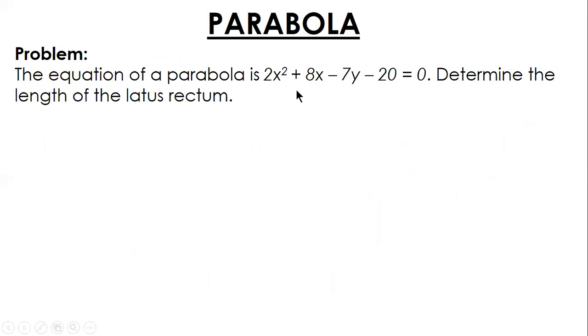Let us solve a sample problem. The equation of a parabola is 2x² + 8x - 7y - 20 = 0. Determine the length of the latus rectum. The first step is transpose the variable with no second degree term as well as the constant to the right. So transpose these to the right as well as 20.